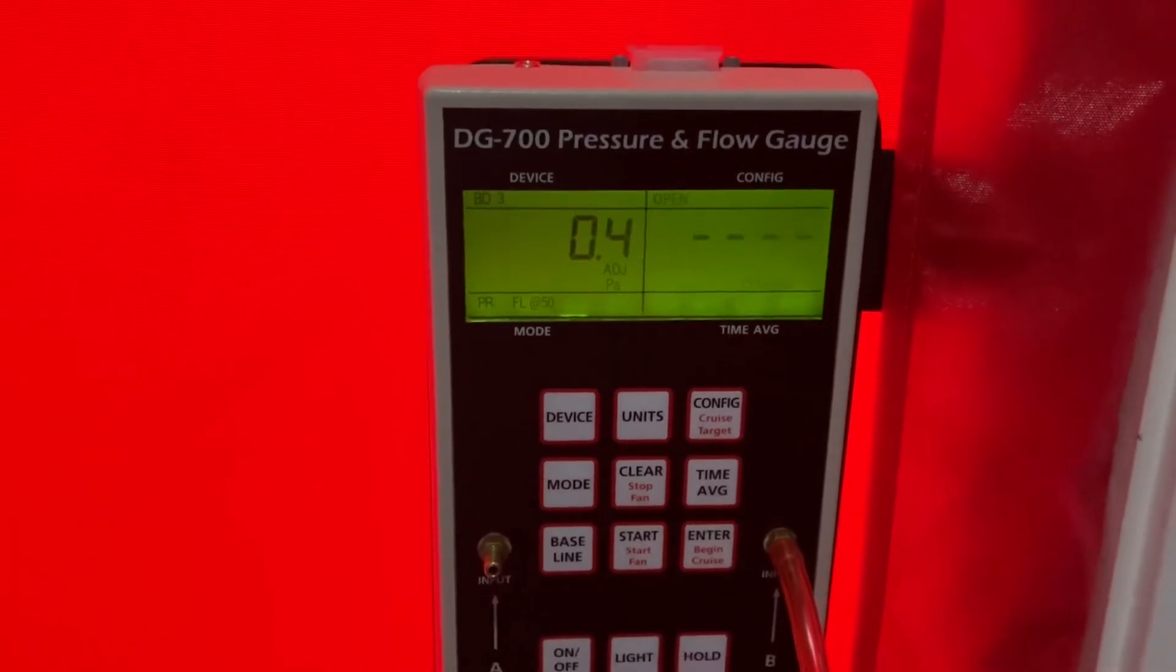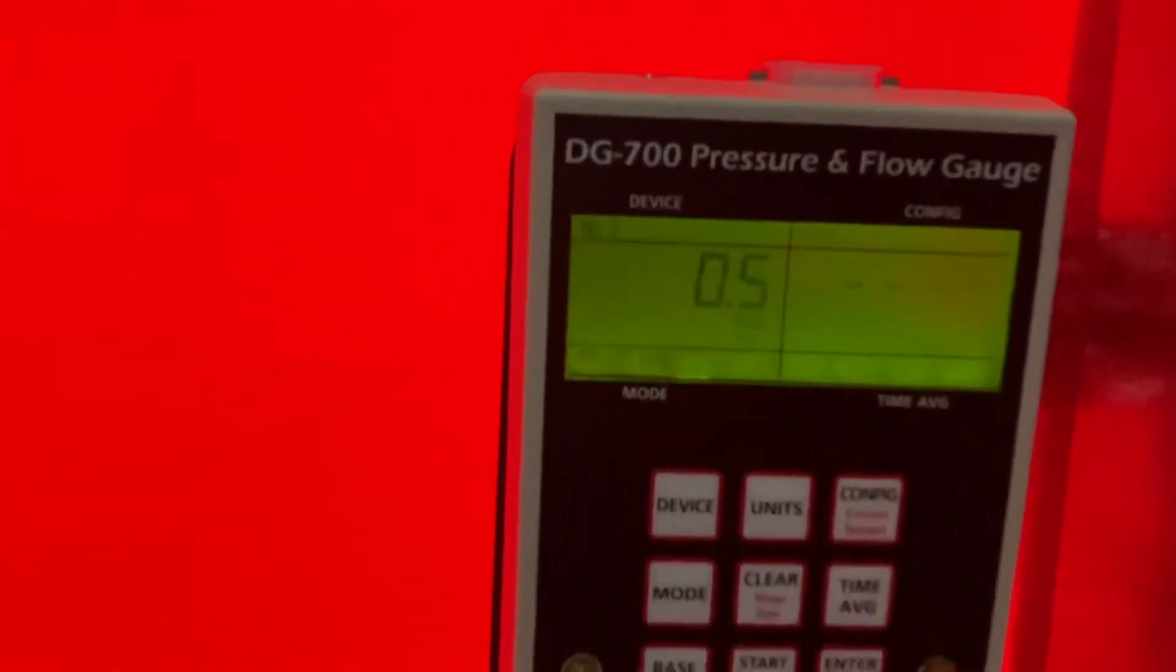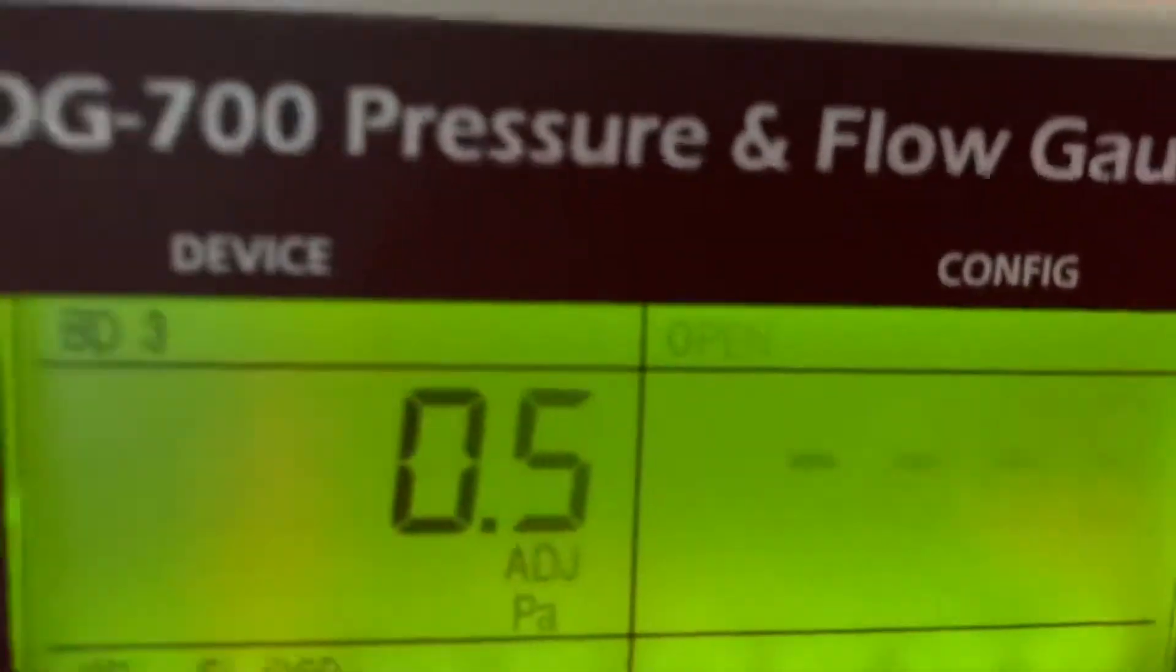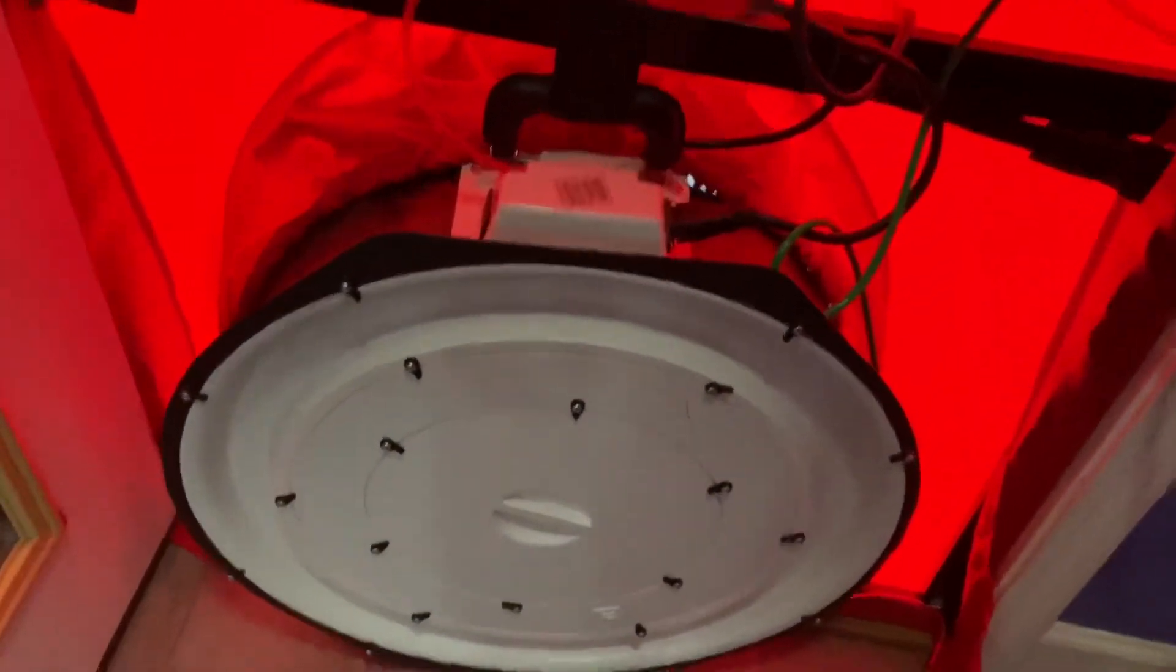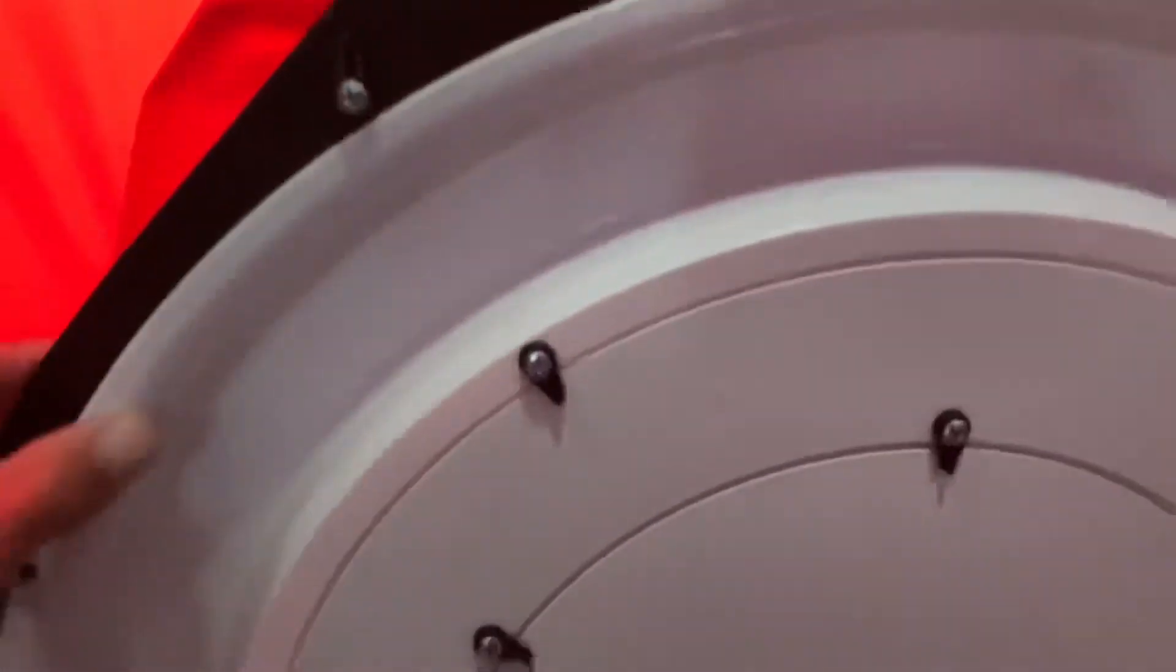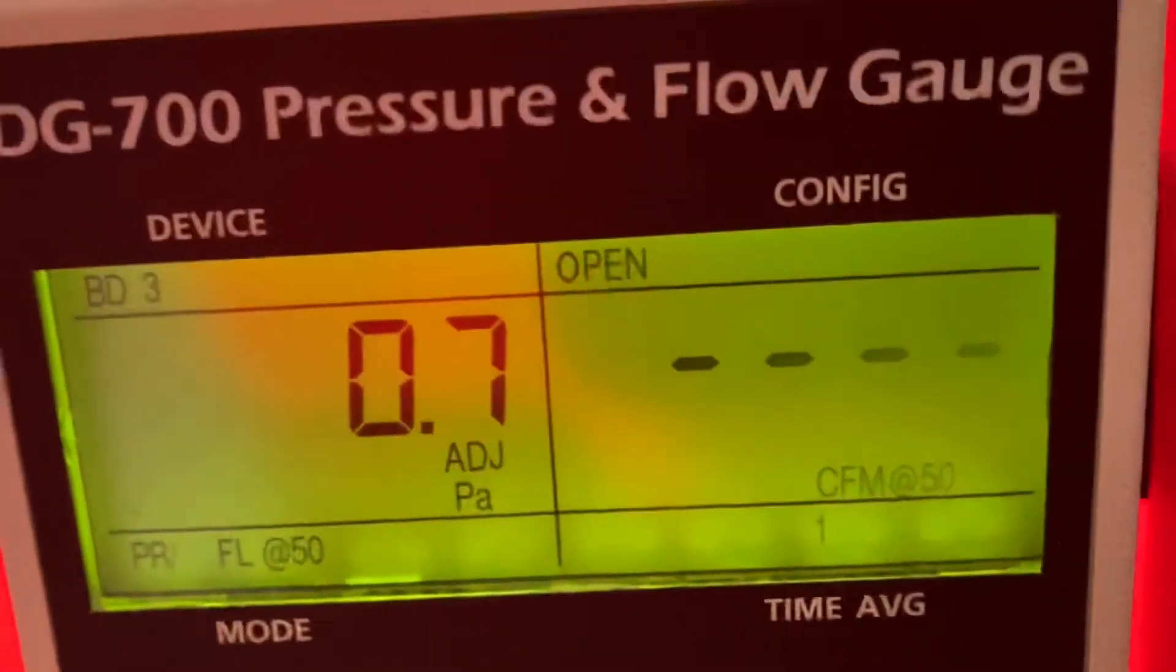Then we need to make sure our fan and manometer are configured the same way. So this is for the fan—the manometer thinks the fan is open. So we need to take all the rings off of it to make sure it is open. Then from there we can go ahead and ramp it up and get our first test.